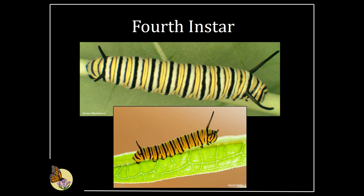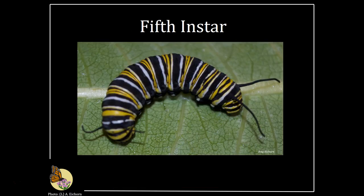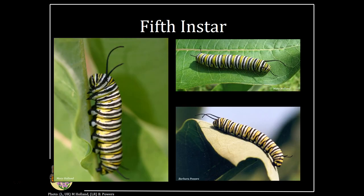These are fourth instar monarch larvae. The tentacles of the fourth instar clearly extend beyond the front of its head if folded down. The tentacles of a fifth instar extend well beyond the front of the head and are so long that they droop and curl. Note the droopy, curved, long front tentacles on these fifth instar examples.